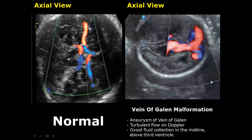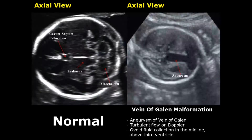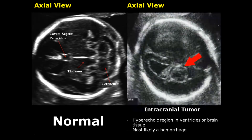In vein of Galen malformation, there is an aneurysm of this vein, and on Doppler it will show turbulent flow — a mixing of colors visible right here, with the vein having a larger diameter. Here is another image of vein of Galen malformation without Doppler showing the larger diameter, but the best way to identify it is on Doppler.